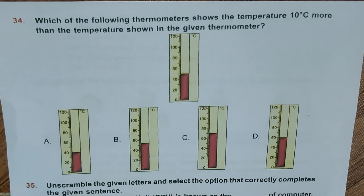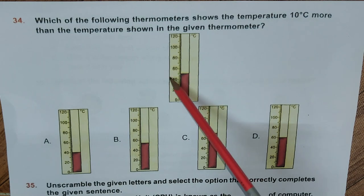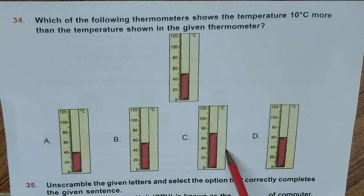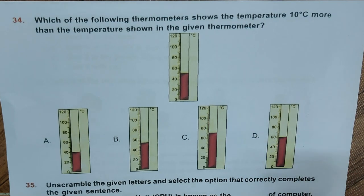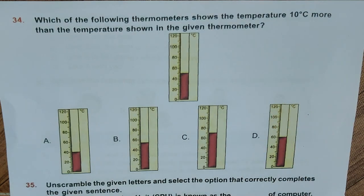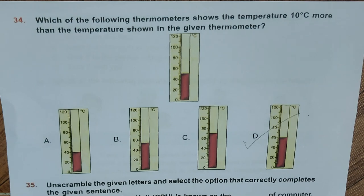Question 34: Which of the following thermometers shows a temperature 10 degrees centigrade more than the temperature shown in the given thermometer? The given thermometer shows 50 degrees Celsius. Options: A. 40°C, B. 52°C, C. 70°C, D. 60°C. Ten more than 50 is 60, so the correct answer is D, 60 degrees centigrade.